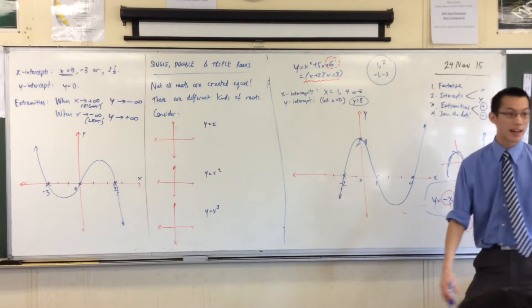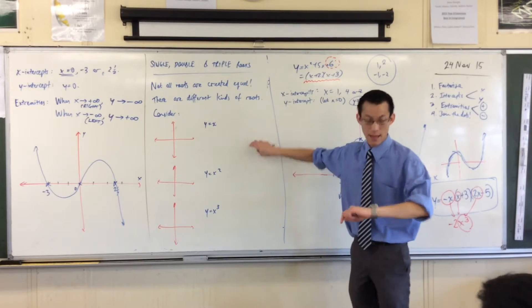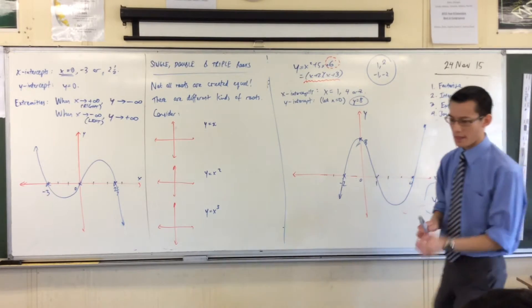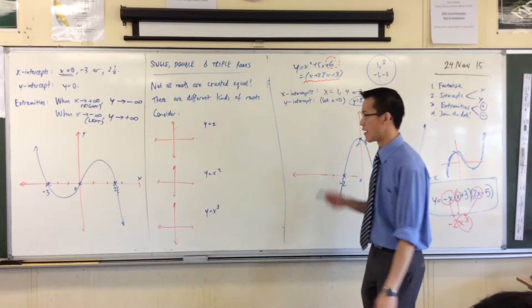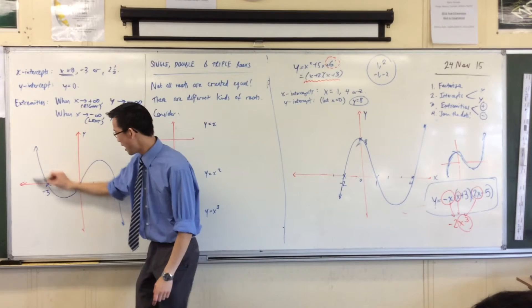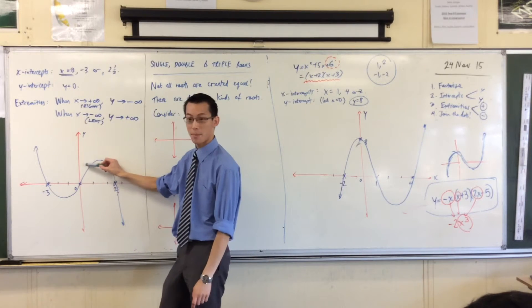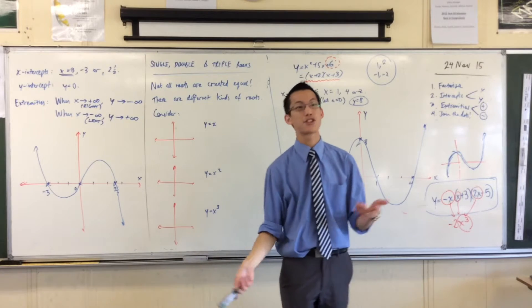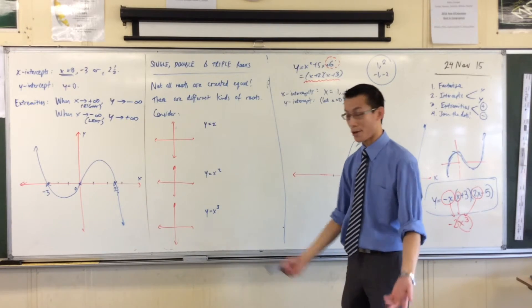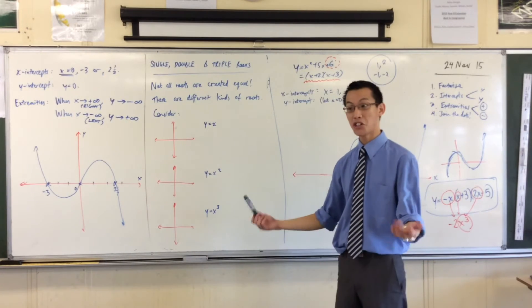Now, let me make one last note before we move on to this last item here. You might notice that the graph, these cubic graphs, they turn around a couple of times. You see it's coming down, and then it turns around and comes back up, and then it turns around again and goes back down. Because these are points where the graph turns around, very originally, mathematicians call these turning points.